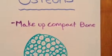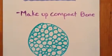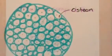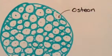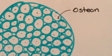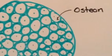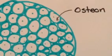An osteon is something that helps make up compact bone. As you can see, an osteon is one single piece of the puzzle that helps contribute to making bone so strong.